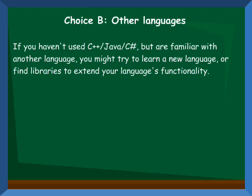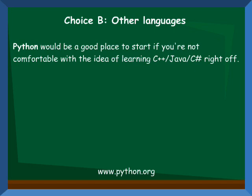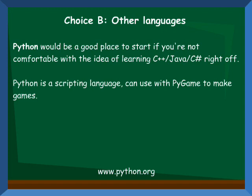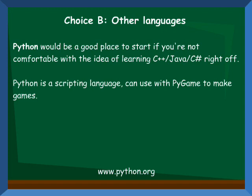If you have coded, but not in an object-oriented language, you might try out one of the object-oriented languages, or you could stick with the language you're familiar with, provided that you're not programming in HTML. A programming language I would suggest for those who aren't really sure if they want to do more hardcore coding, such as with C++, is maybe to try out Python. Python is a scripting language and can be used with Pygame to make games relatively easily. Additionally, if you do decide you want to move on to something else later on, Python is widely used in engines such as Blender and Panda3D for scripting.